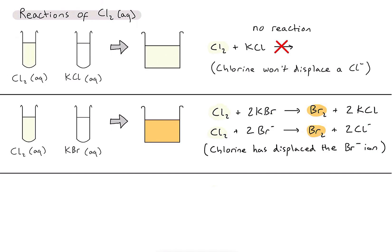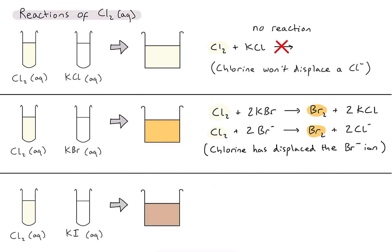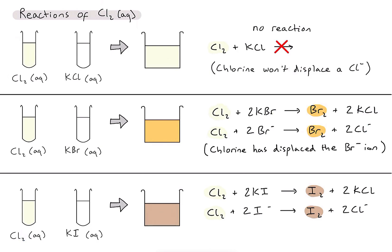Let's look at the third example — adding chlorine to potassium iodide. Again we get a nice distinctive colour change to that brown colour, indicating we've formed iodine. The balanced equation is very similar to the second example: chlorine has displaced the iodide ion by becoming chloride ions, and the iodide ions have formed brown iodine on the product side. So chlorine has displaced the iodide ion, meaning chlorine is more reactive than iodine.